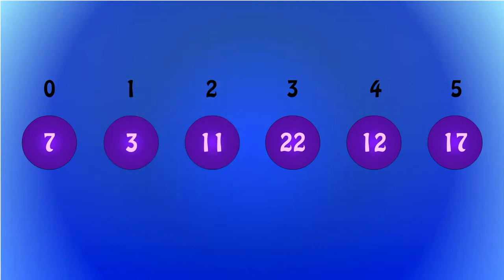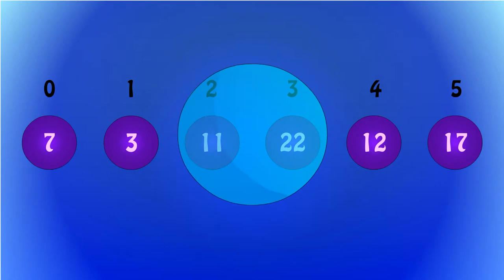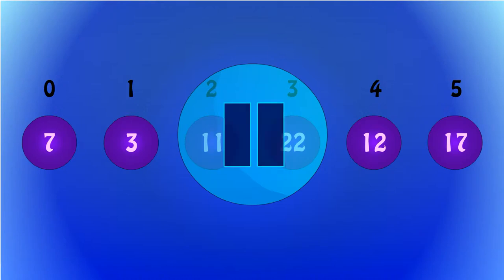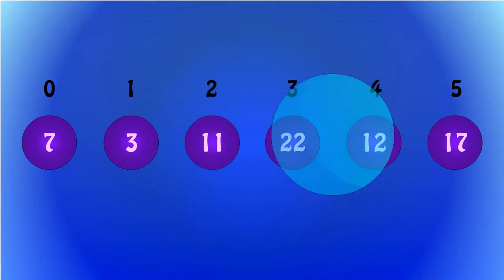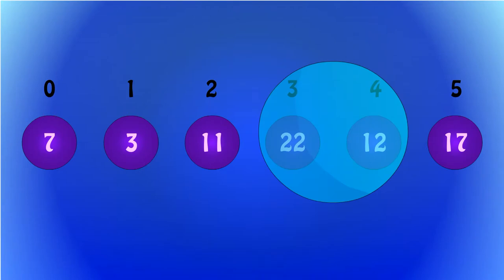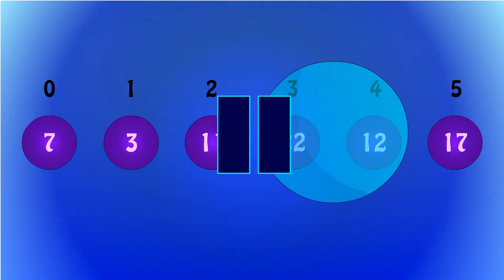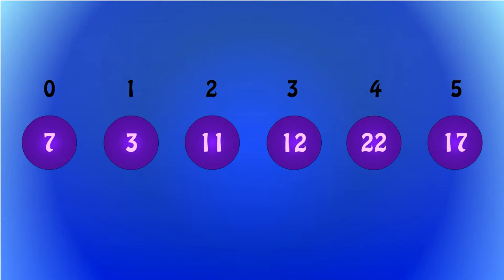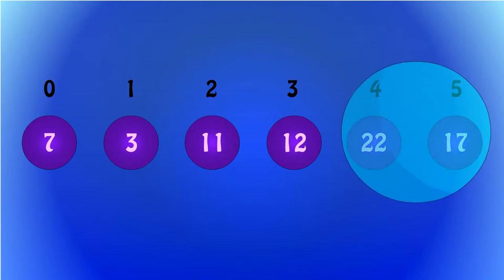It then moves again to the next two indices. The CPU now checks 11 and 22. If you said 11 is not greater than 22, so the bubble moves on again, then you were right. This time, 22 is being compared to 12. In this case, 22 is greater than 12, so 22 and 12 swap places. Now the CPU compares 22 and 17. 22 is greater than 17, so they swap places.